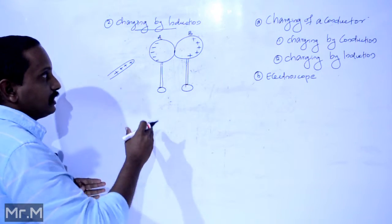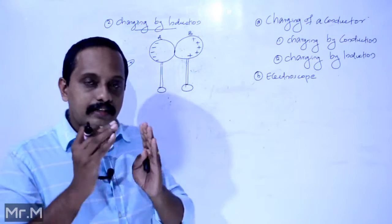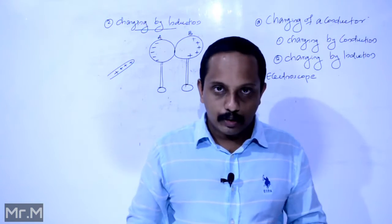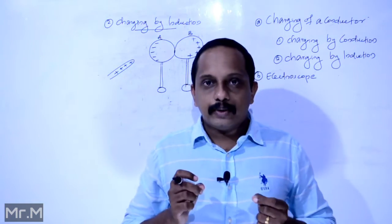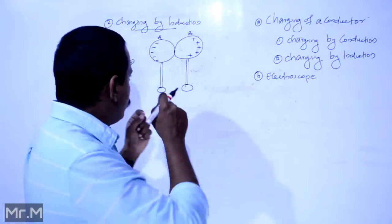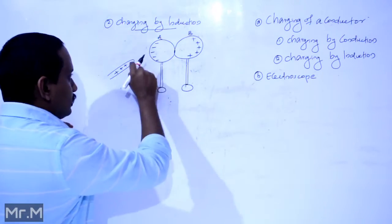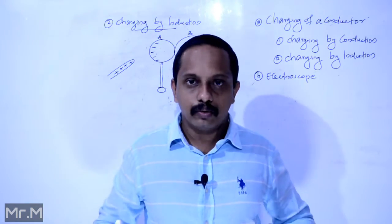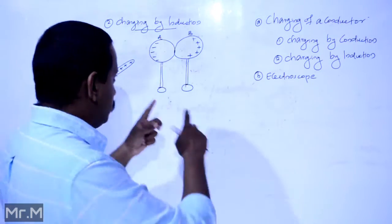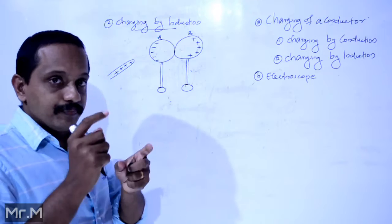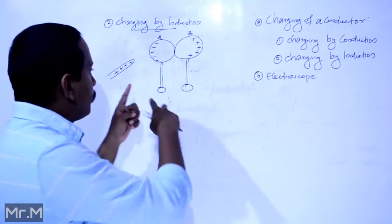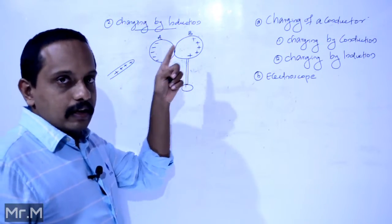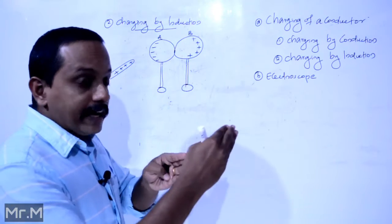We have two uncharged spherical conductors on insulated stands in contact with each other. A charged object is brought near to one sphere but is not brought in contact with it — it is only brought near to one sphere.